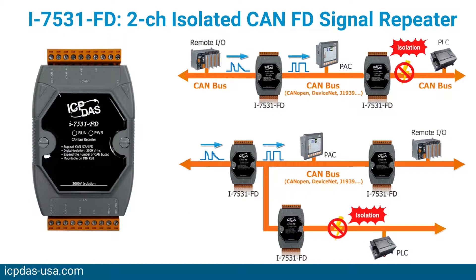The I-7531FD is a CAN-FD signal repeater which can connect two or more CAN networks with the same baud rate. Based on the signal repeat function of the module, users can use different numbers of the module to combine tree-shaped or star-shaped CAN network topology. When there are too many devices on the CAN network, using the I-7531FD can increase the driving force of the CAN signal to drive more CAN devices.